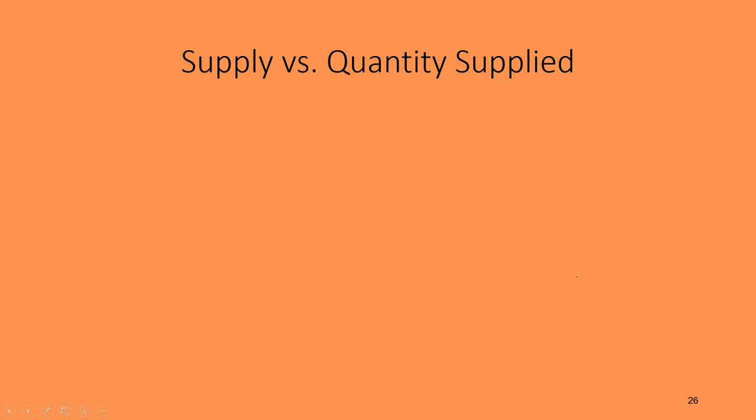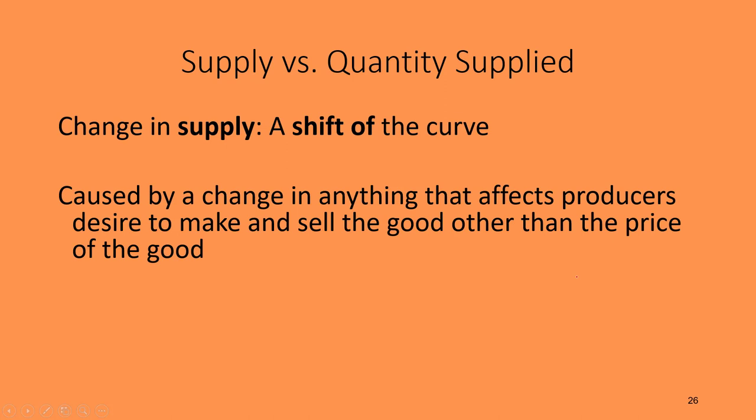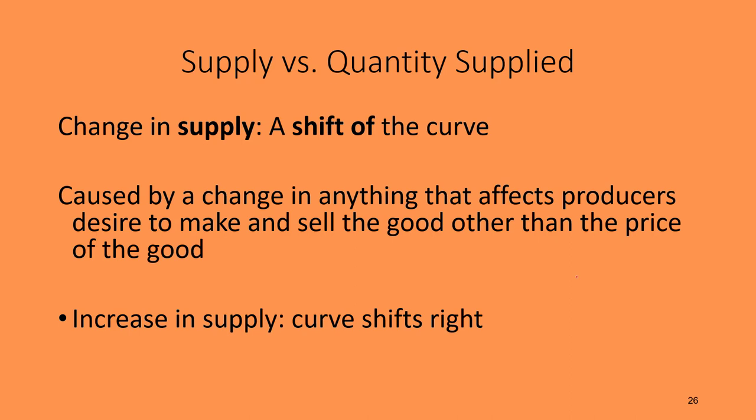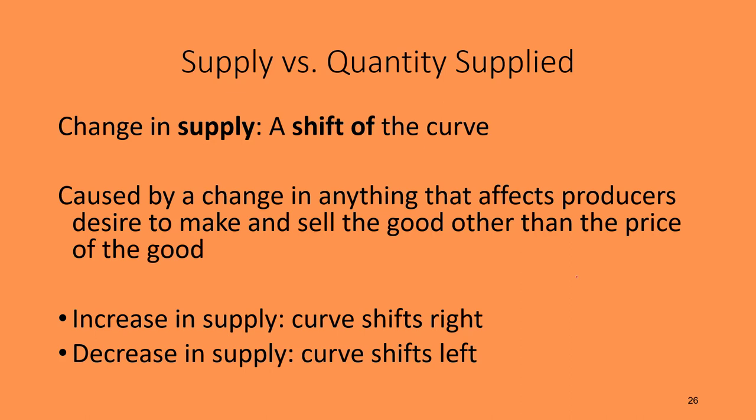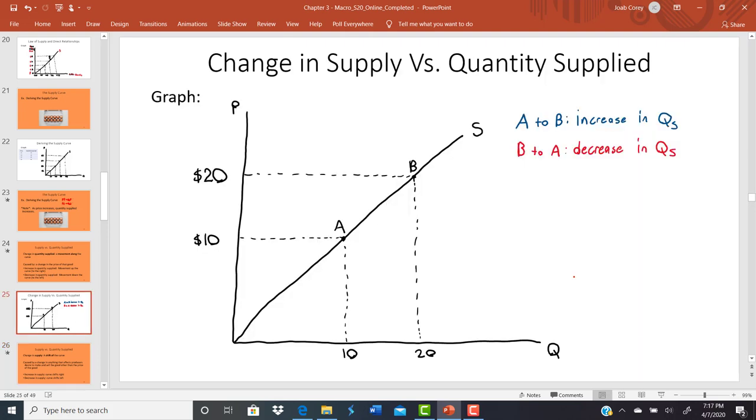A change in supply, by contrast, is a shift of the entire curve — it picks up and moves to the right or left. It's caused by a change in anything that affects a producer's desire to make and sell the good other than the price of the good itself. An increase in supply shifts the curve to the right; a decrease in supply shifts it to the left. All increases are movements to the right; all decreases are movements to the left.